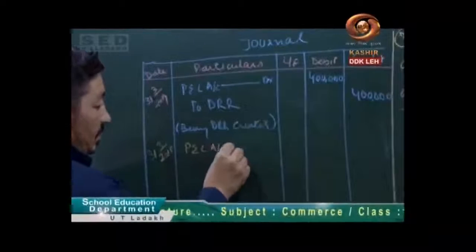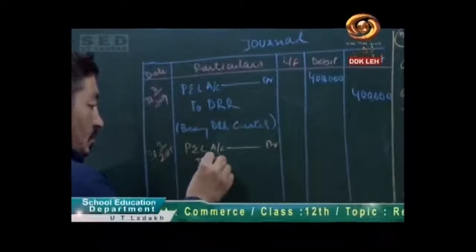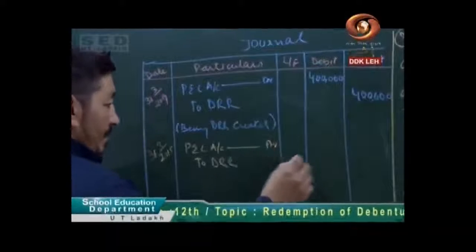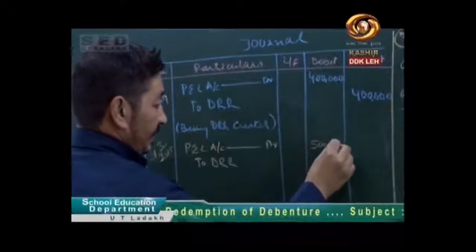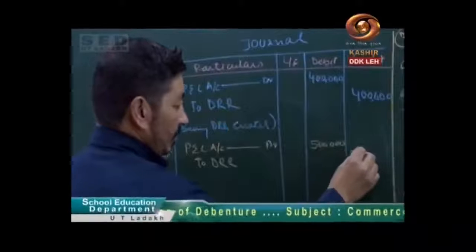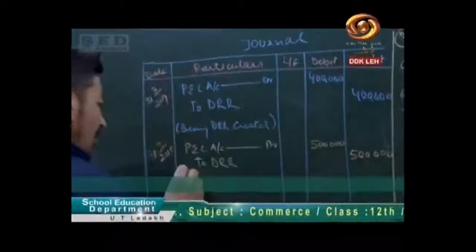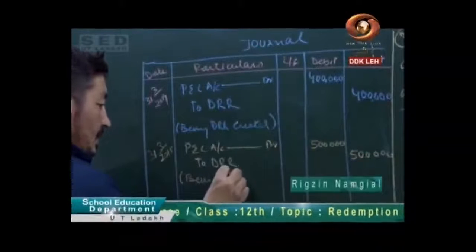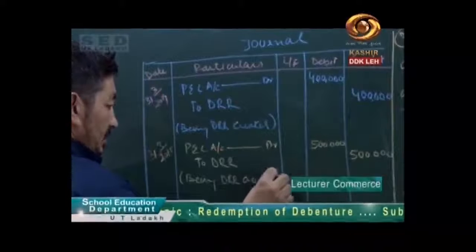Same way, the entry: Profit and Loss account debit to Debenture Redemption Reserve — this will be 5 lakhs. The narration is the same: being DRR created.